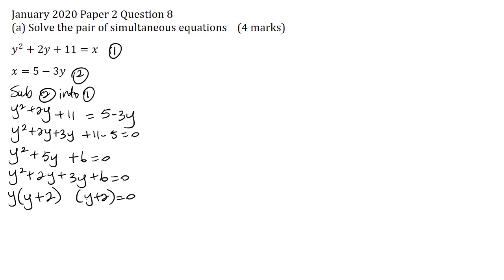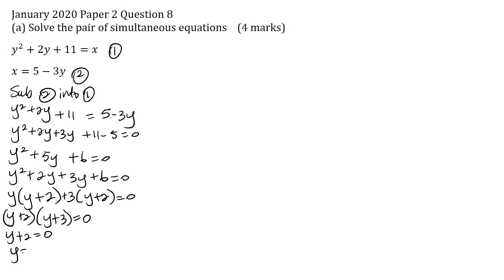I'll take the third term and divide it by the first term in brackets. So 3y divided by y gives positive 3. Factoring out the brackets, this is y plus 2, and placing the remaining terms in a bracket gives y plus 3 is equal to 0. Solving for y: y plus 2 equals 0 gives y equals minus 2, or y plus 3 equals 0 gives y equals minus 3.